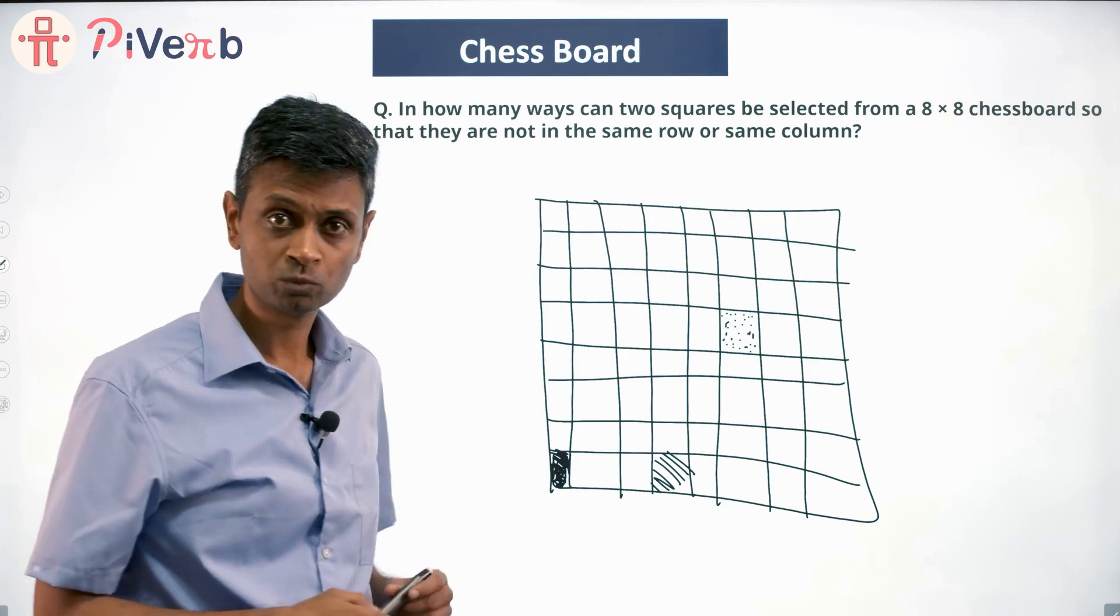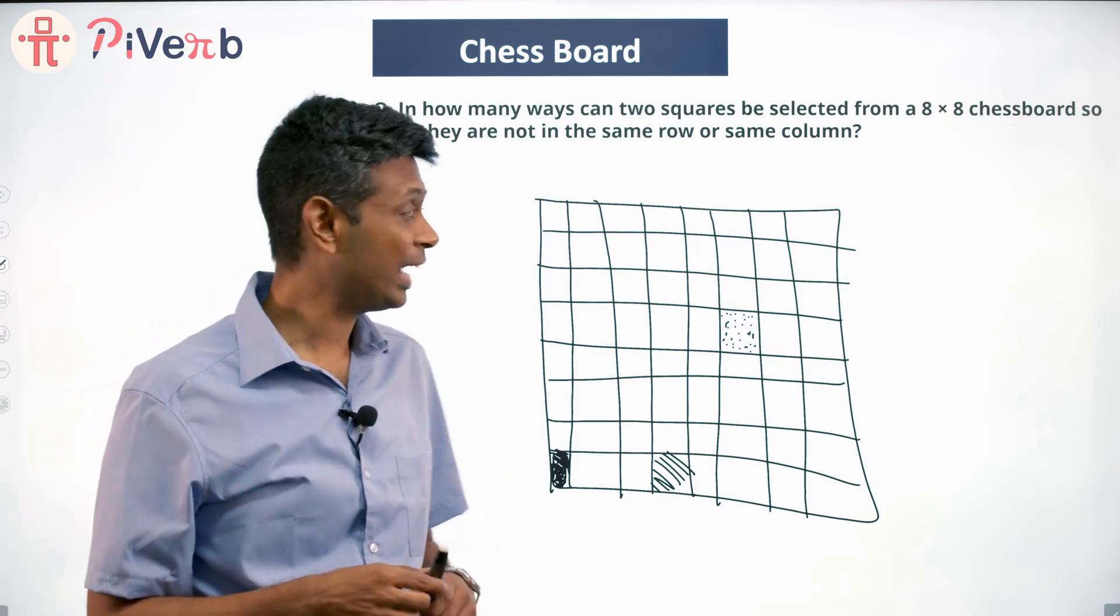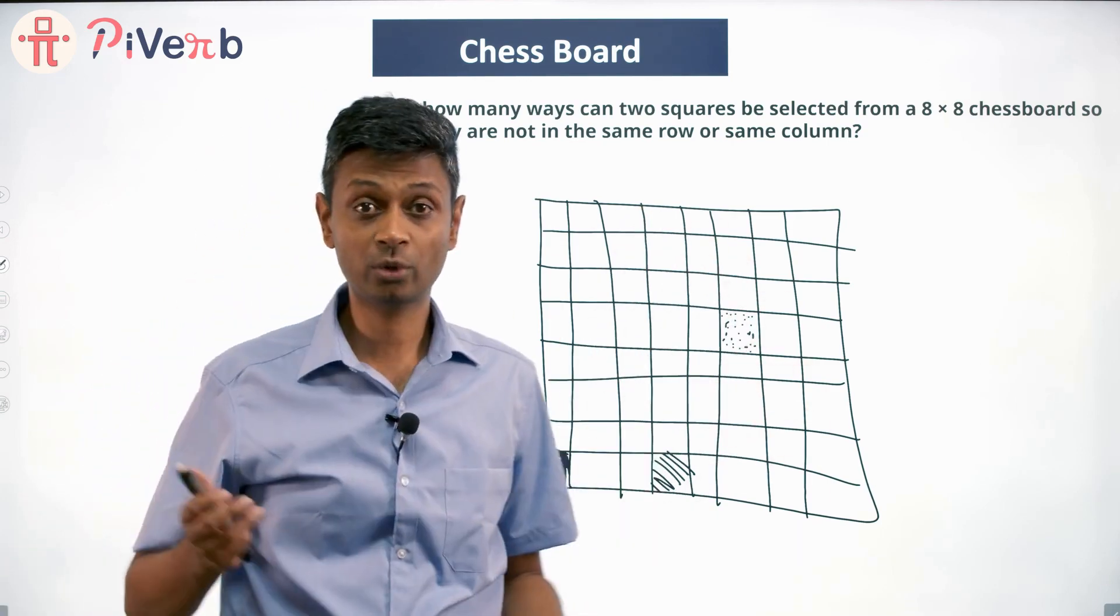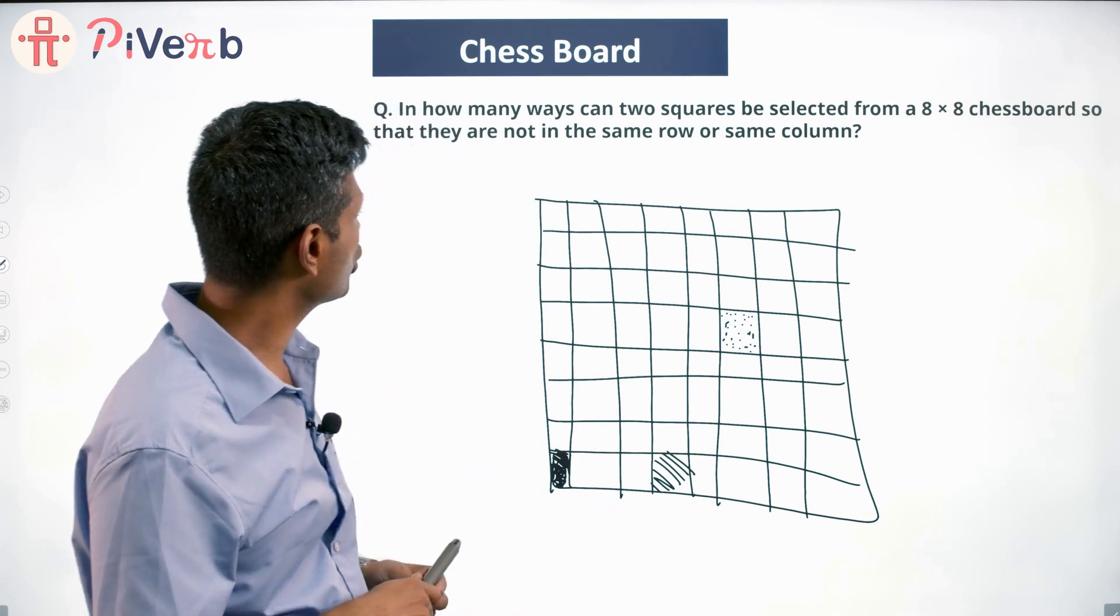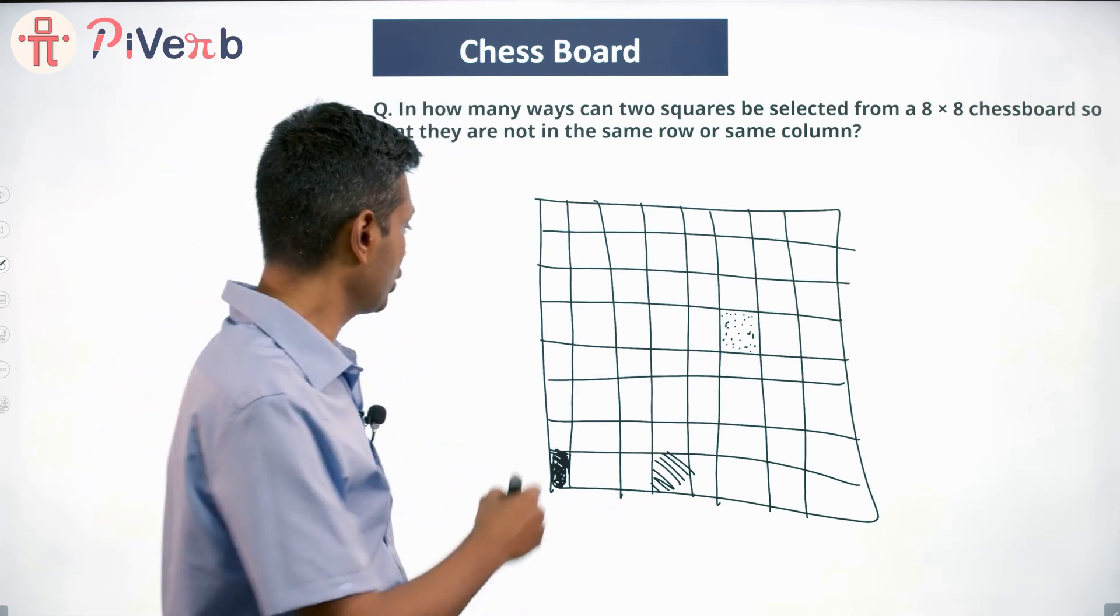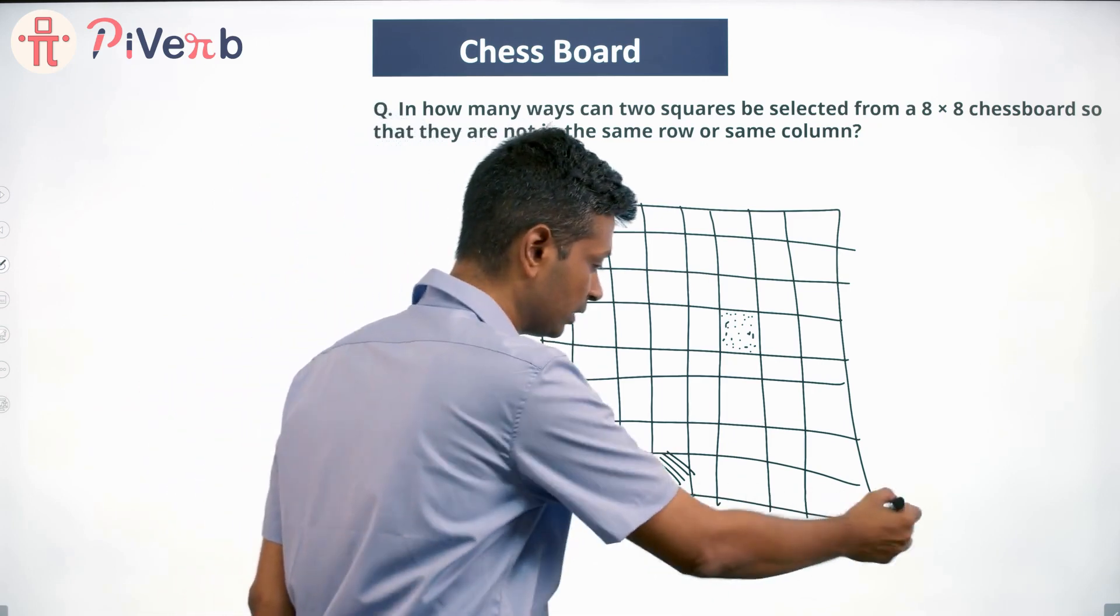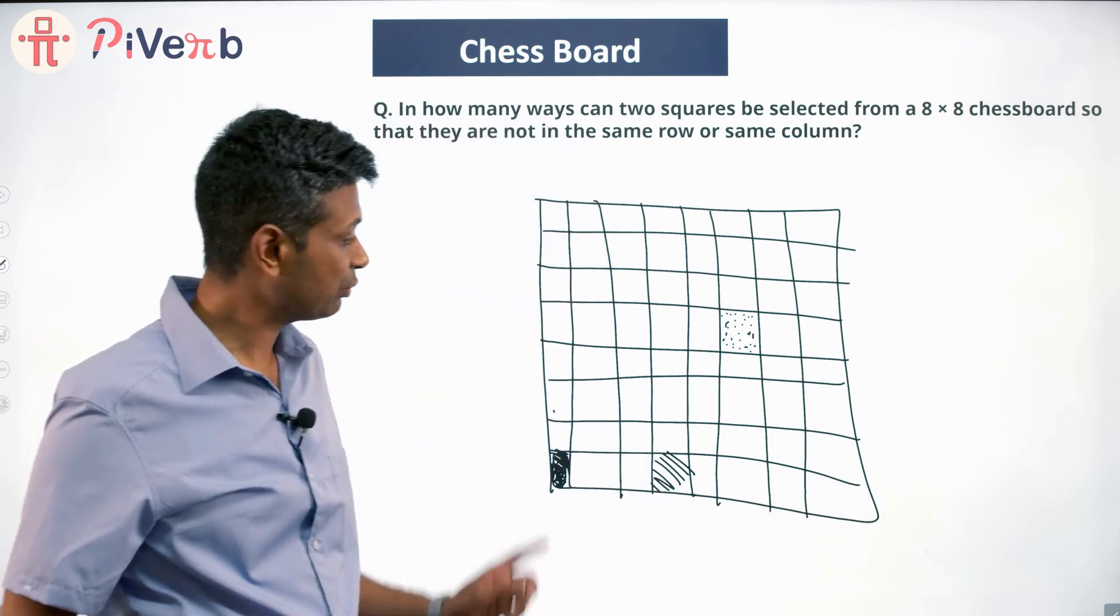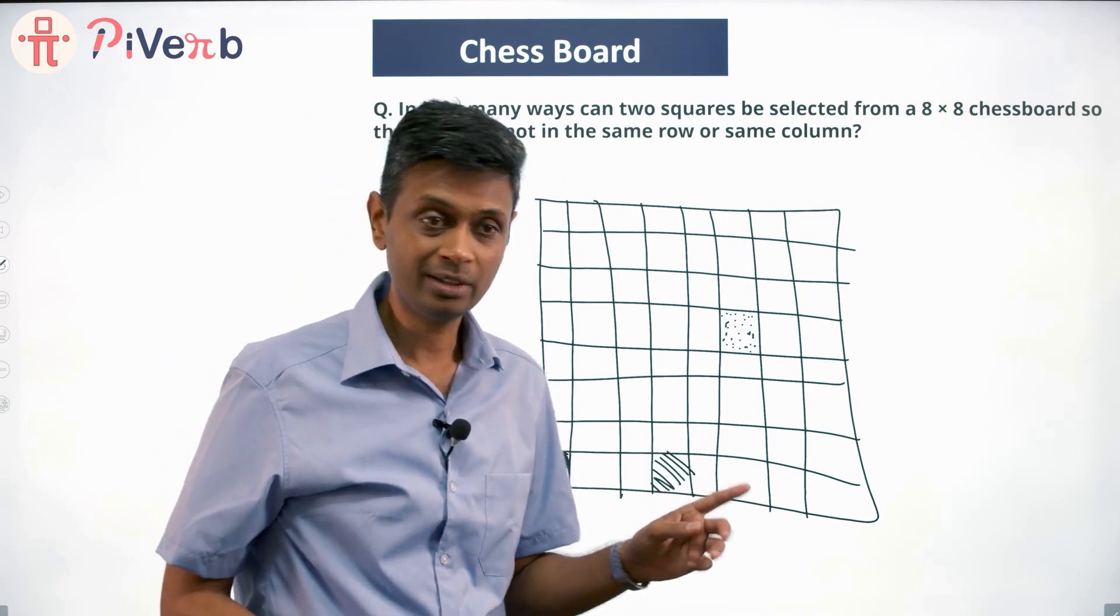Let the first square be here. The second square could be any of the remaining 63 squares, but our condition says it should not be in the same row or same column, so it should not be any of these seven or these seven.